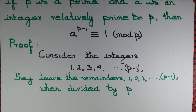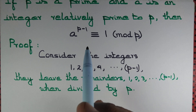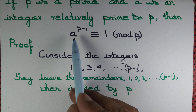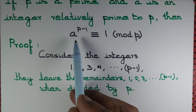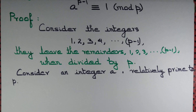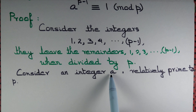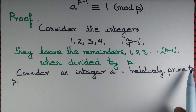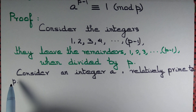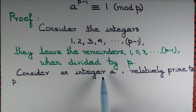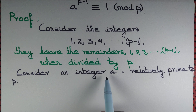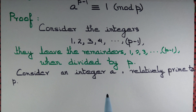Now let us consider an integer a relatively prime to p — in other words, a is not a multiple of p, or a is not divisible by p.